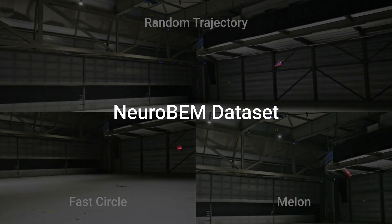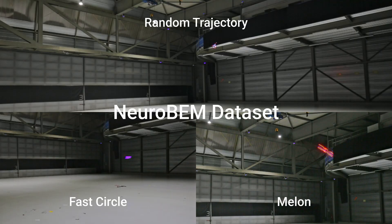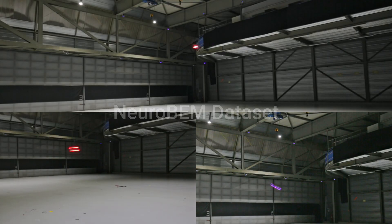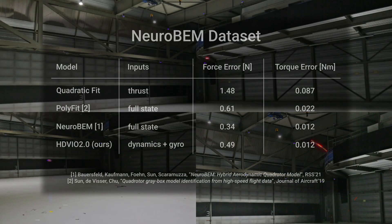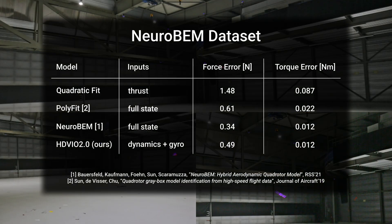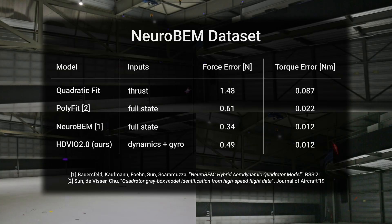We validate our learned dynamics model with the NeuroBAM dataset, which contains very fast and agile trajectories. Our method performs remarkably well compared to model-based, learning-based, and hybrid baselines, despite not having access to the full quadrotor state.